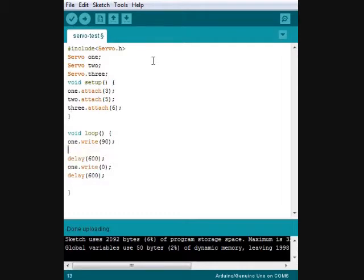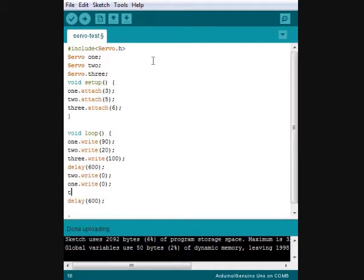Now down here we're going to have to say 2 write 20, we'll just move it a little bit, and 3 write 100. There we go. And it doesn't matter what order you put them in because everything is going to be executed pretty fast in between the delays, you're not going to notice. 2 write zero, we'll just put them all in zero, and 3 write zero.